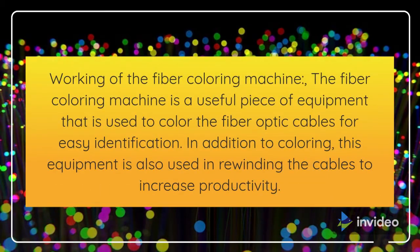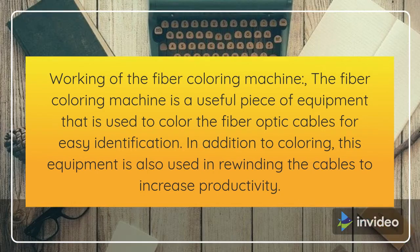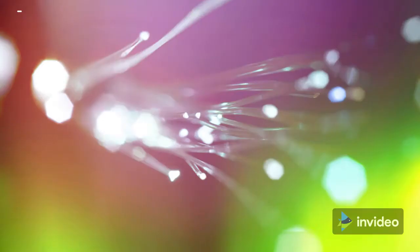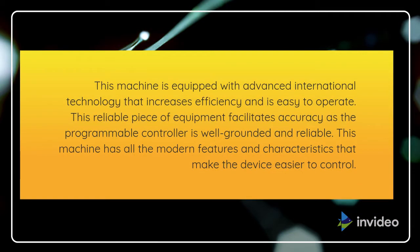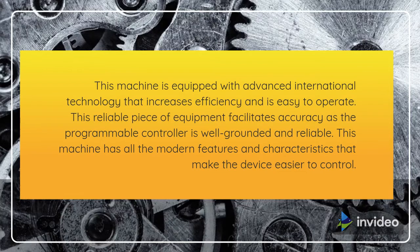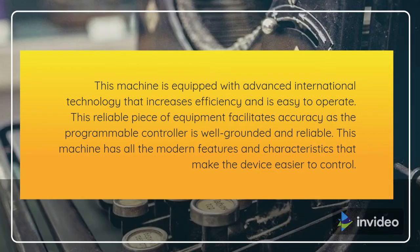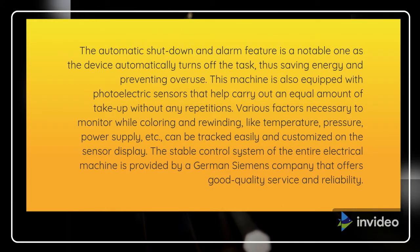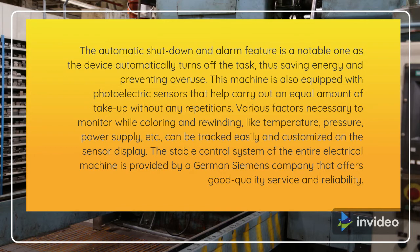Working of the fiber coloring machine: the fiber coloring machine is a useful piece of equipment used to color the fiber optic cables for easy identification. In addition to coloring, this equipment is also used in rewinding the cables to increase productivity. This machine is equipped with advanced international technology that increases efficiency and is easy to operate. This reliable piece of equipment facilitates accuracy as the programmable controller is well grounded and reliable. This machine has all the modern features and characteristics that make the device easier to control. The automatic shutdown and alarm feature is a notable one, as the device automatically turns off the task, thus saving energy and preventing overuse.